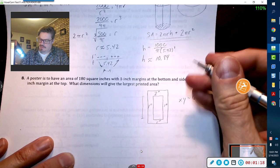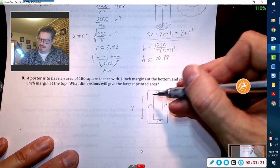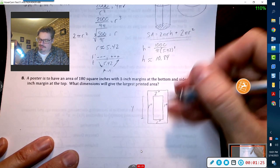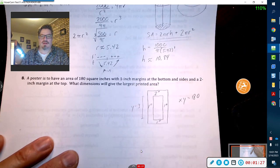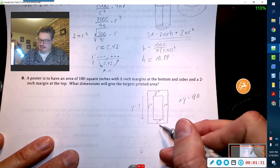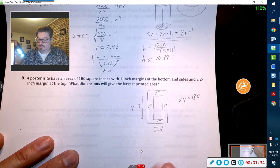This right here is going to be y, but you got to get rid of those two margins, so it would have to be y minus 3 because you got 2 and 1. Then this guy here would be x minus 2.